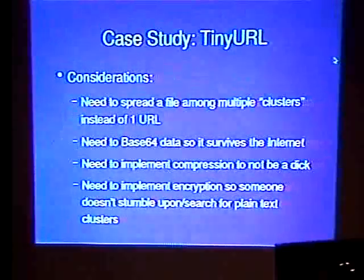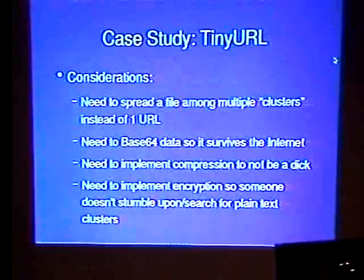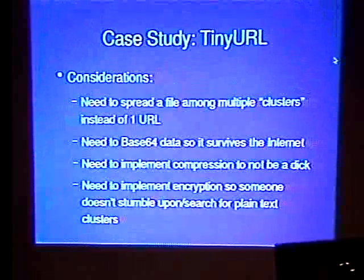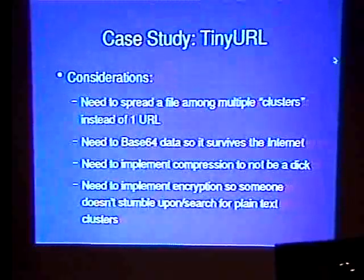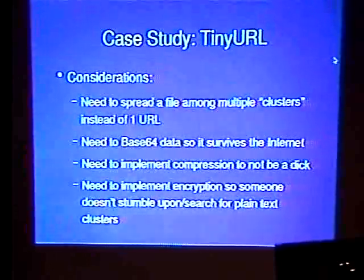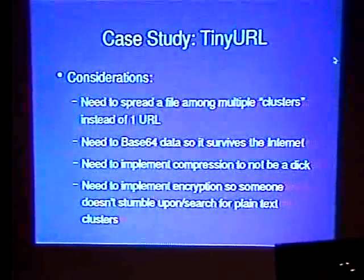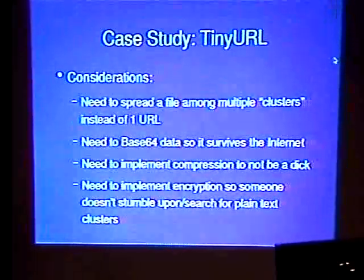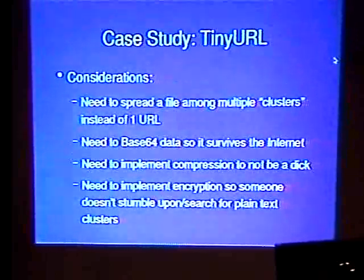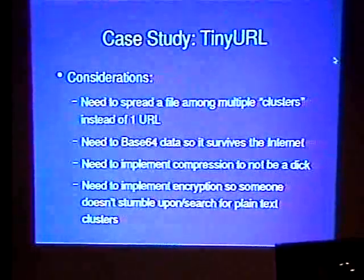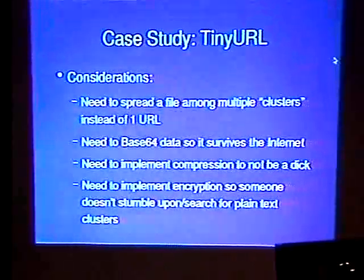I need to base64-encode the data because I'm storing it in a database and I have no idea if they take only 7-bit ASCII or 8 bits, or what character encoding they're using. If I base64 it — which is what they do for email — I know it won't get molested and it will survive the internet. But base64-encoding also increases the size of your data by 33%. So, to not be a dick, I should compress the data before base64-encoding it, to make it as absolutely small as possible so I don't own their database with gigs and gigs of porn.